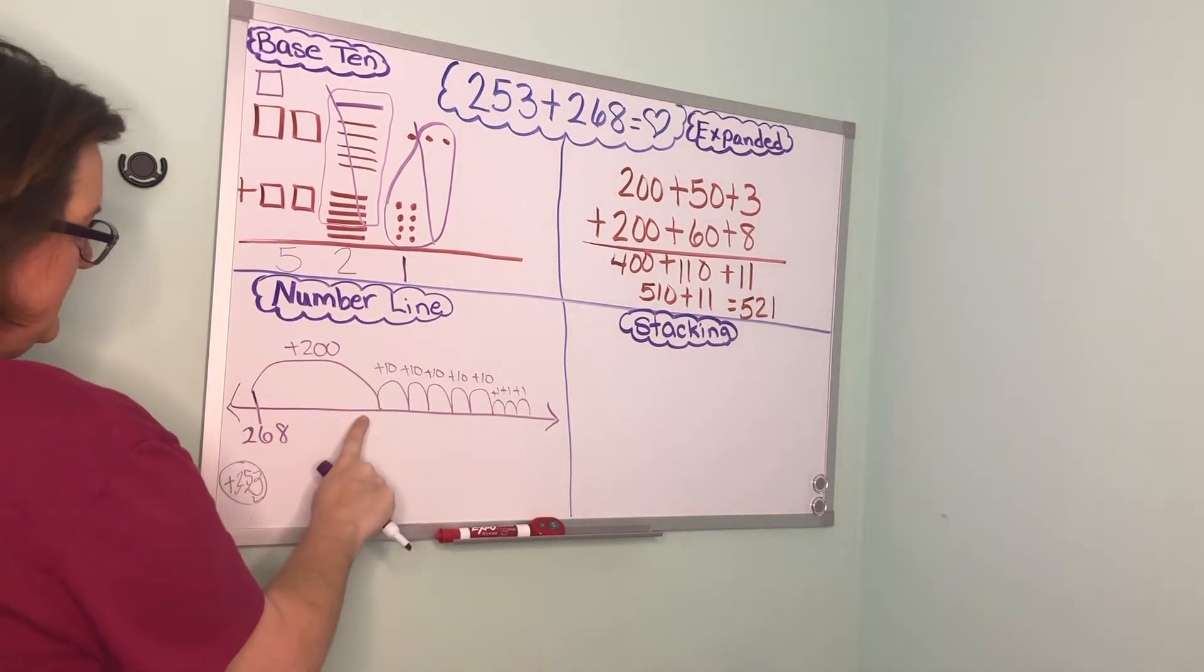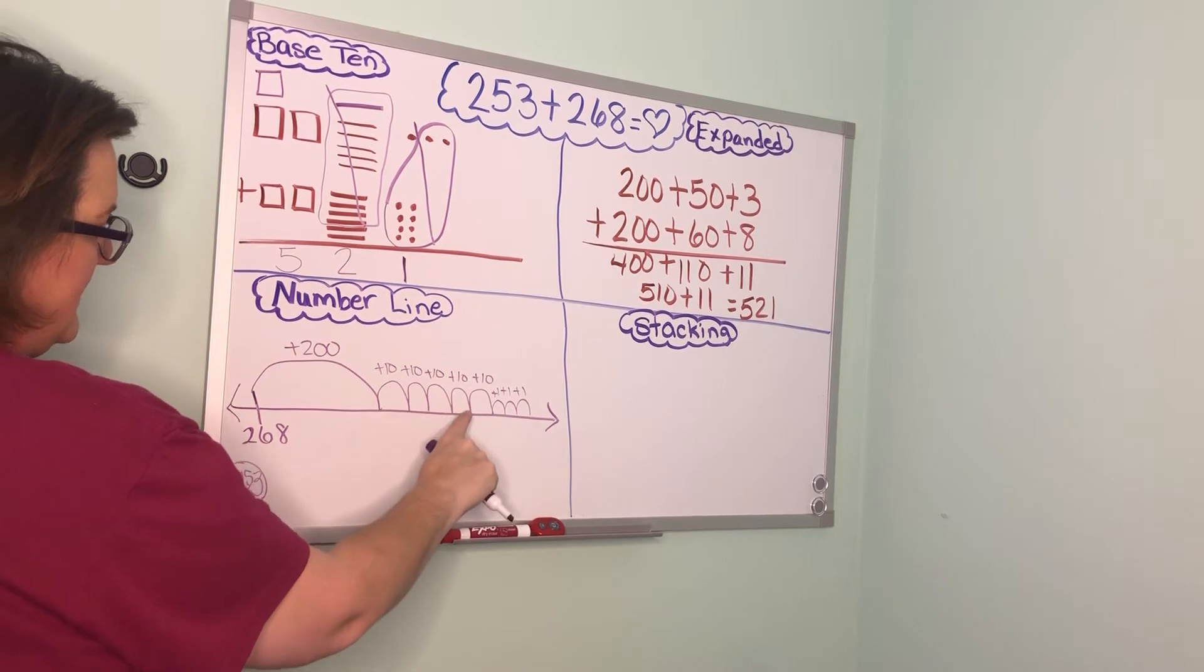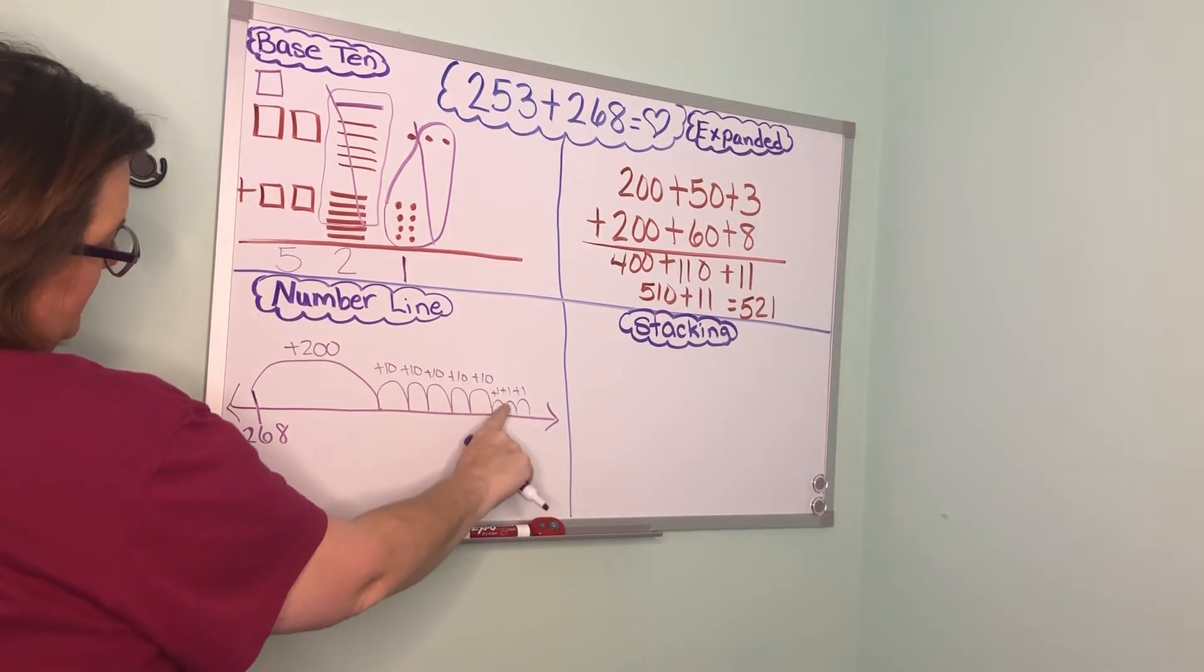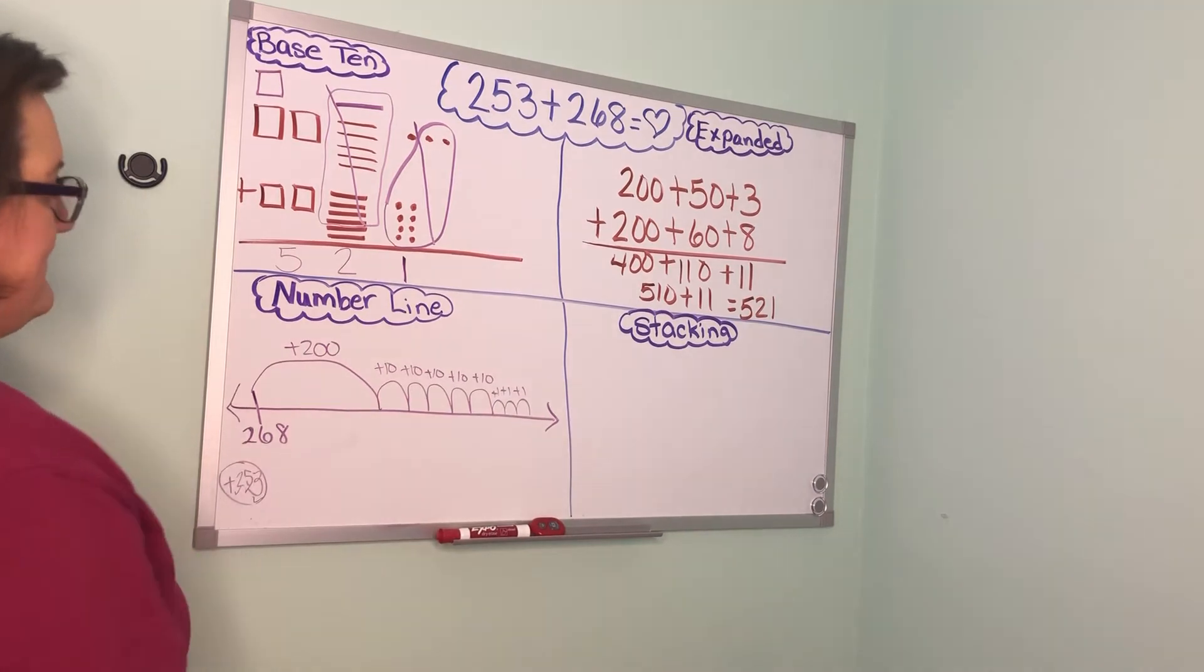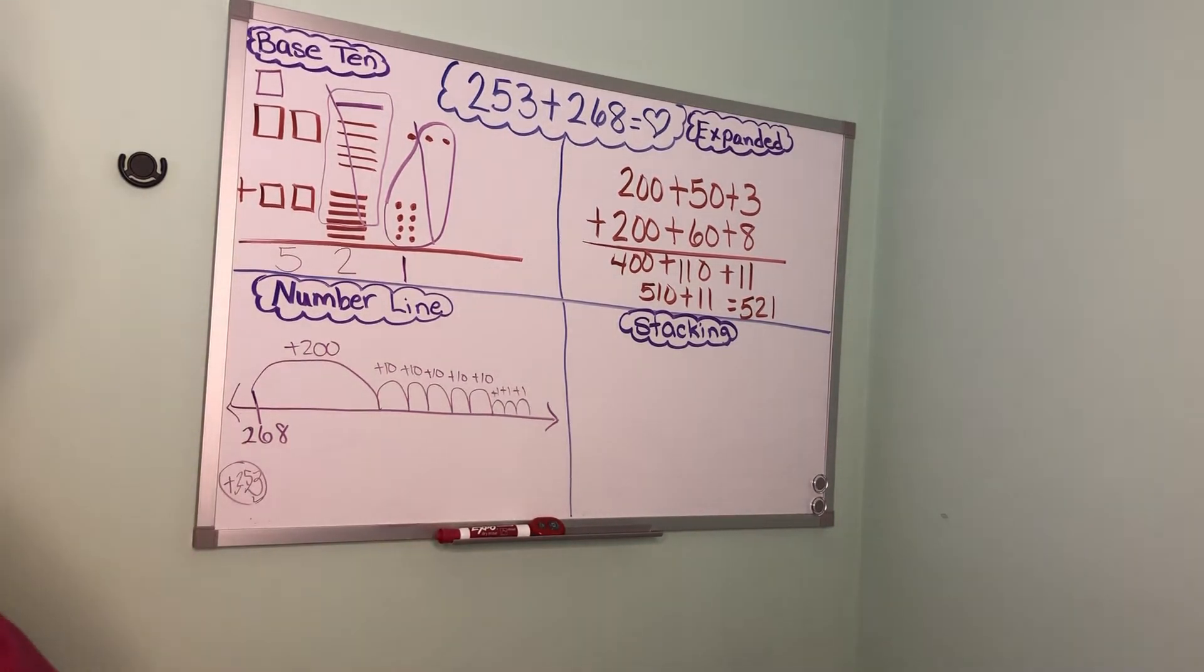So there's 200, 210, 220, 230, 240, 250, 251, 252, 253. So I am ready to start doing my math.